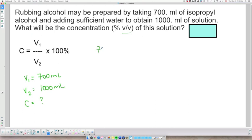If I replace over here, I get 700 mL over 1000 mL times 100 percent is equal to my concentration. So my concentration is equal to 70 percent.